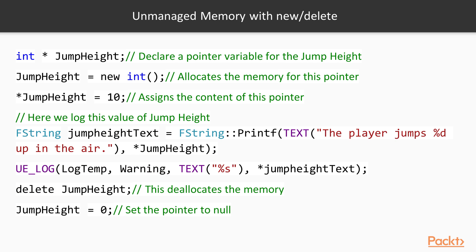With the new and delete operators, almost entirely the code stays the same with the exception of the allocation and deallocation lines. In the allocation line, we call the new operator on our object type — so for an int pointer called jump_height, you say new int. The new operator also calls the constructor of your object, so the integer constructor is called. We again place the value 10 into the content of jump_height by dereferencing it with the star operator. Once you're done with the pointer and want to deallocate it, you simply say delete jump_height, which deallocates the memory and calls the destructor of your object. Finally, you set jump_height to null.